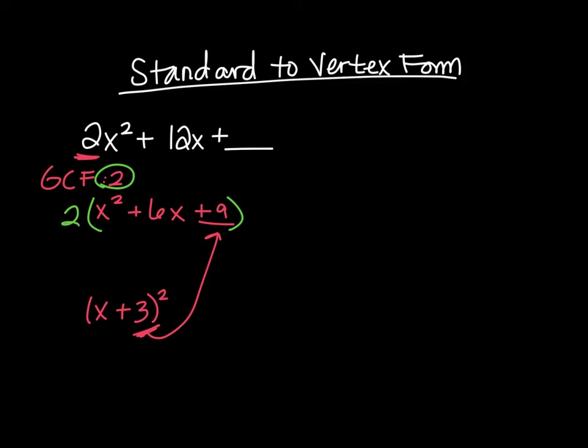So there's secretly a 2 out here, which means I'm not really just adding 9, if you multiply, I'm really adding 18. And when I rewrite this as part of my answer, and I rewrite it into a perfect square, there's going to be a 2 on the outside, and then x plus 3 squared.